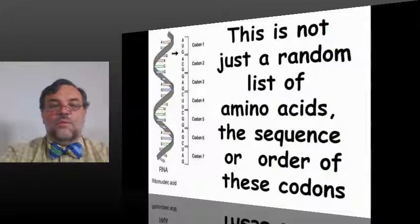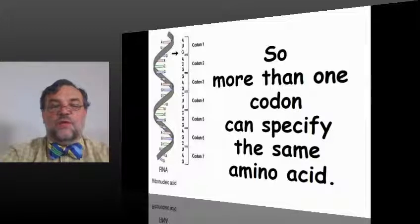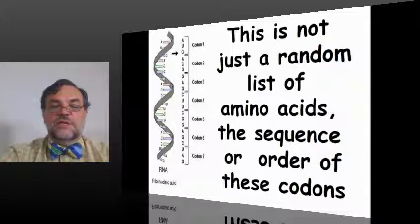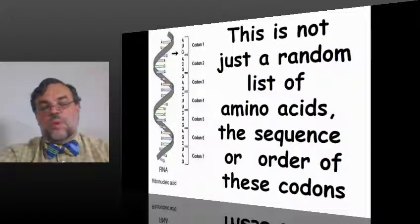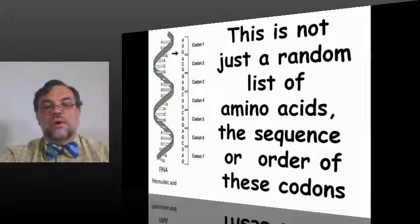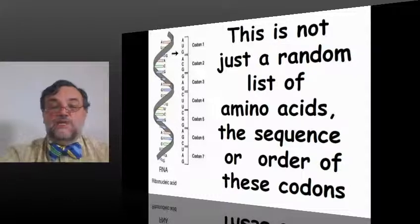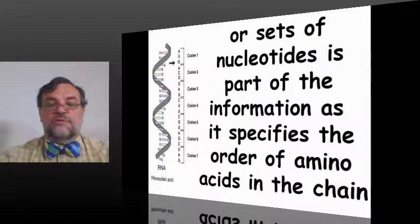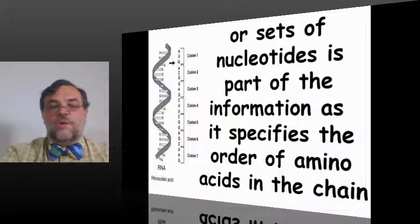We actually have four nucleotide combinations that are used for what we could call punctuation: one for start and three for stop. So that leaves 60 nucleotide combinations or 60 codons to specify amino acids. Quite a few of them specify more than one way to specify the same amino acid. It's important to note this is not just a random list of amino acids. The sequence or order of these codons or nucleotides within the DNA chain that gets copied over to the RNA chain in the same order—that sequence of the codons is part of the information, as it specifies the order of amino acids in the chain.